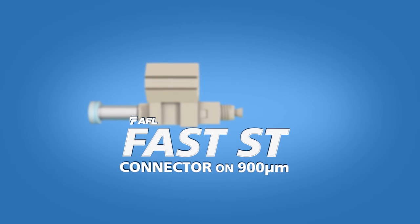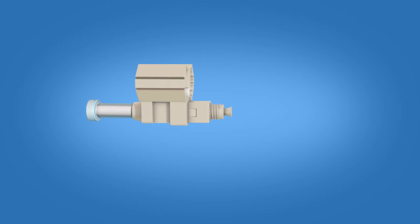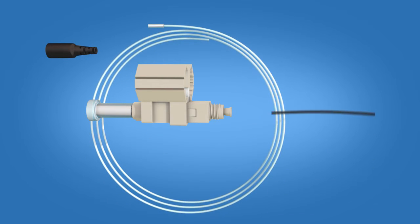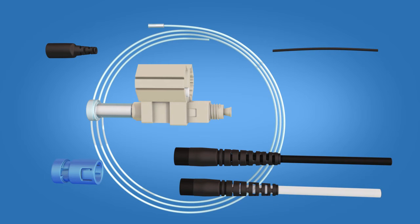The Fast ST Connector Kit contains the following items: a 900 micron boot, clear protective tubing, 250 micron tubing, ST connector housing, and a Fast ST connector. A separate boot kit is available for 2 and 3 millimeter terminations.